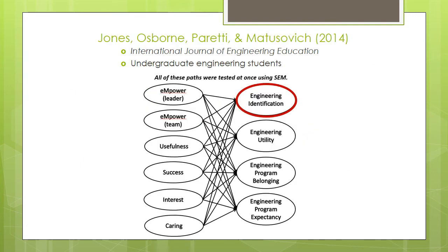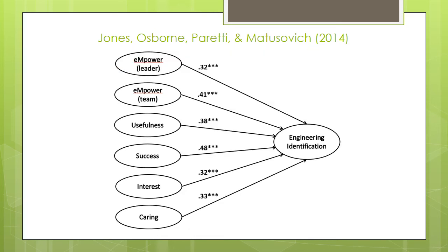In one study by Jones, Osborne, Peretti, and Matisovich, published in the International Journal of Engineering Education, we examined whether students' perceptions of the MUSIC model components in an engineering course would be related to engineering identification when other important constructs were included in a structural equation model, such as engineering utility, belonging, and expectancy. We found that all of the MUSIC components were statistically related to identification, providing support for the idea that the MUSIC components can lead to domain identification.